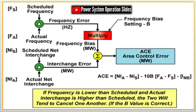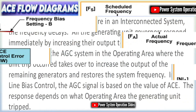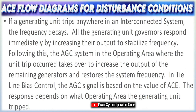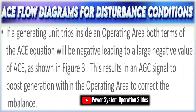Tie-line bias control is a mode where the AGC logic uses both tie-line power error and frequency deviation to create its control signal. A frequency bias factor is applied to the frequency deviation term, effectively biasing the control action to correct both parameters simultaneously. This approach is particularly effective in multi-area systems where interconnection flows and frequency stability must be managed together.